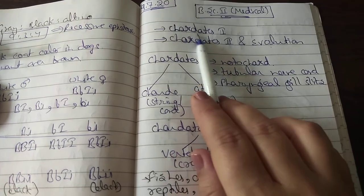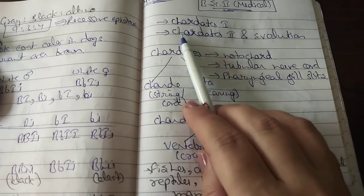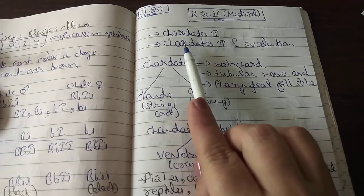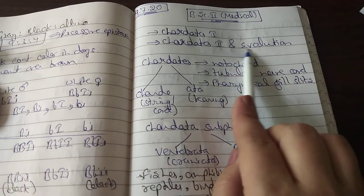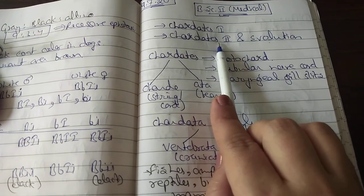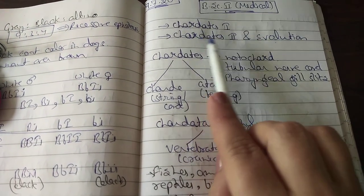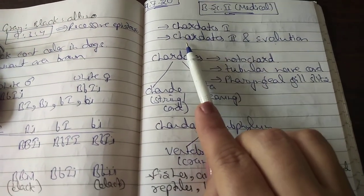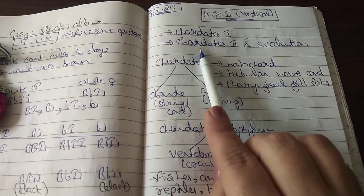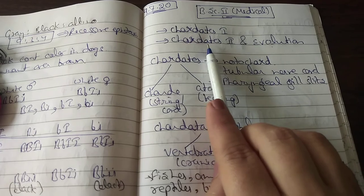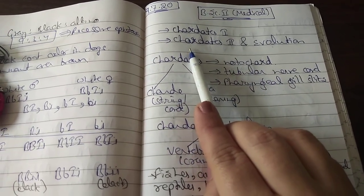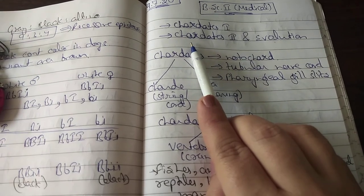These topics will all be studied in Paper 1, Chordates 1, along with classification. In Paper 2, Chordates 2 in Evolution, section A comprises the study of reptiles, in which we will study the urometics. Along with it, we will study pigeons, poisonous and non-poisonous snakes, and flight adaptations in pigeons.